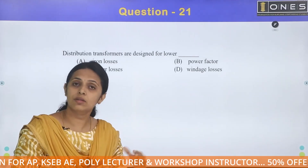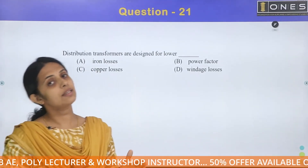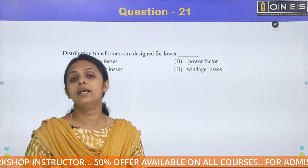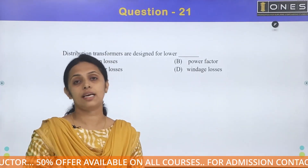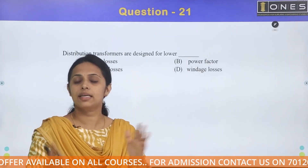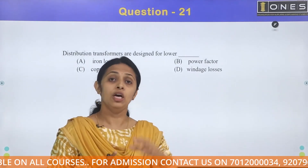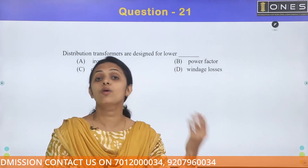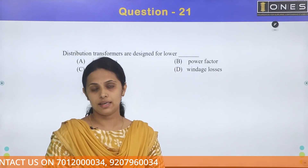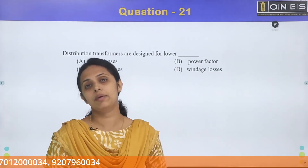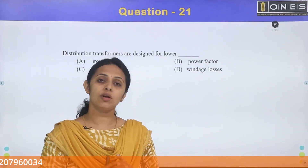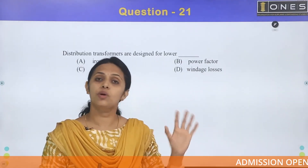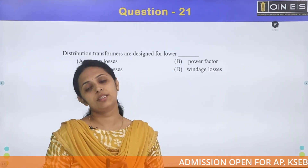Distribution transformers are designed for primary energy. Secondary energy is dependent on the load. So, primary energy is fully energized. Iron loss is still present in distribution transformers because the voltage is still applied to the primary. If the voltage is still on the primary, iron loss is always present in distribution transformers.